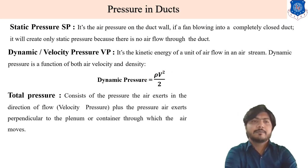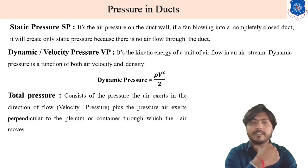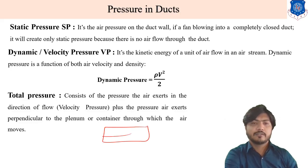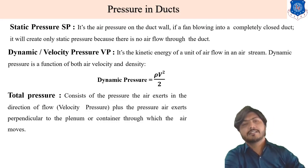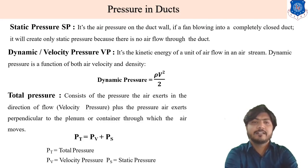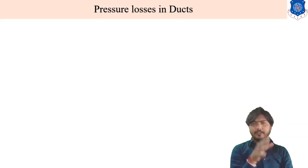Total pressure is the summation of both static pressure and velocity pressure. It consists of pressure exerted in the direction of flow (velocity pressure) plus pressure exerted perpendicular to the plane of the container (static pressure). The formula is: Pt = Pv + Ps.